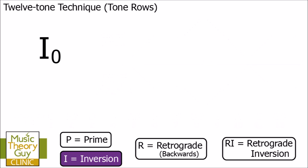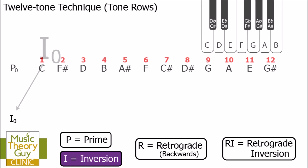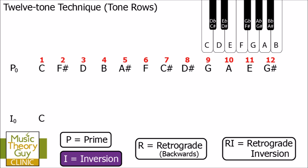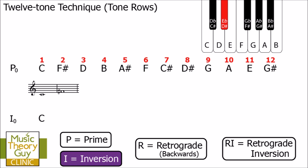Let's look at this in practice with I0. The very first note of I0 is going to be exactly the same note as P0. To work out the second note of I0, we look at the first and second notes of P0, which are C and F sharp. You can see on the treble clef that F sharp is higher than C. Highlighting C on the keyboard and counting up to F sharp: one, two, three, four, five, six — it's six semitones or half steps up from C to F sharp.